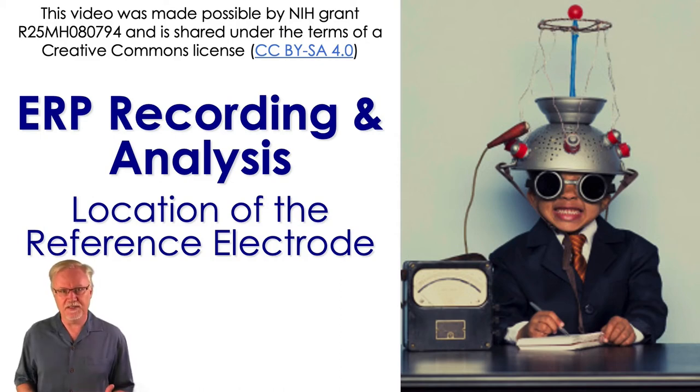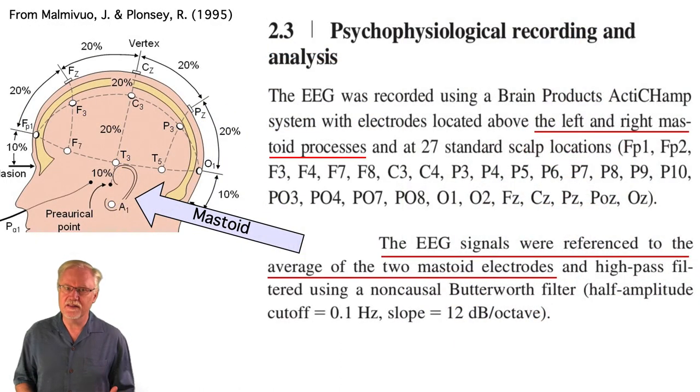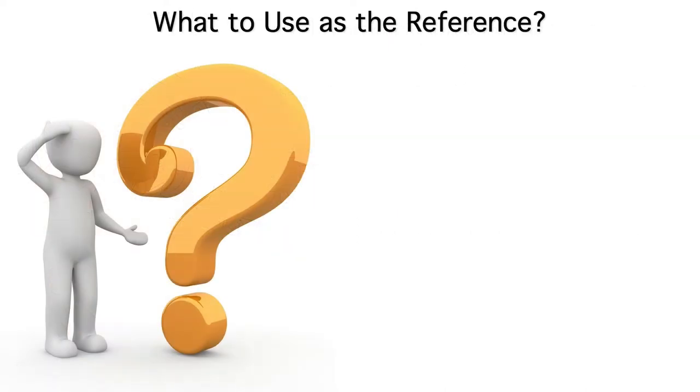Now that I've explained what a reference electrode is, we can see why Felix's study included electrodes over the mastoid processes. They were the reference electrodes. He put one on each side and used the average of the two as the reference.